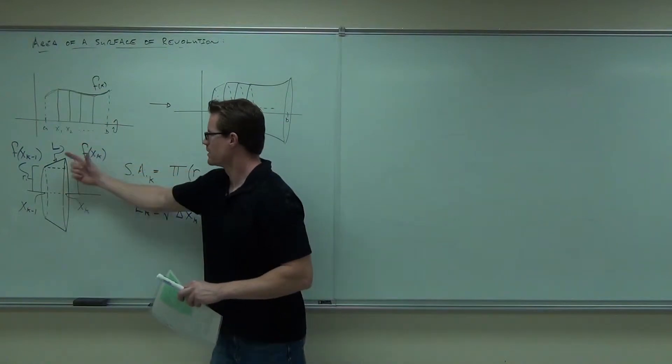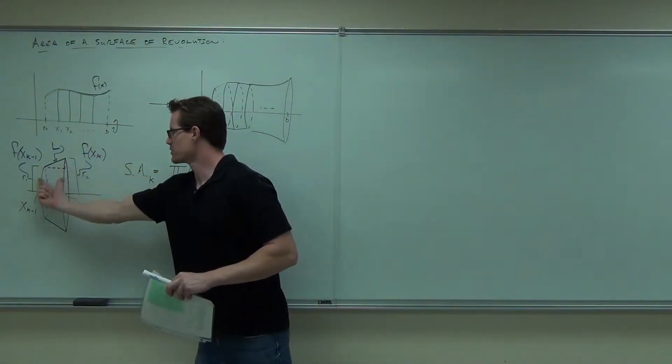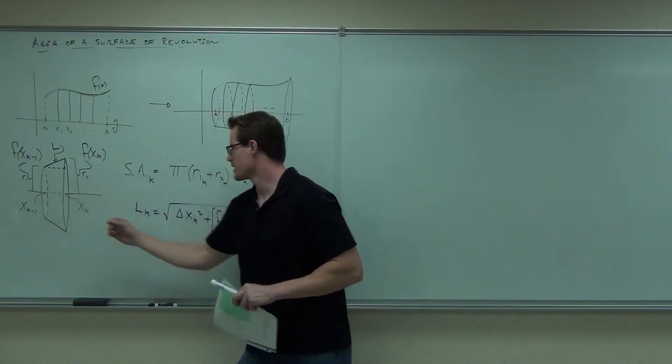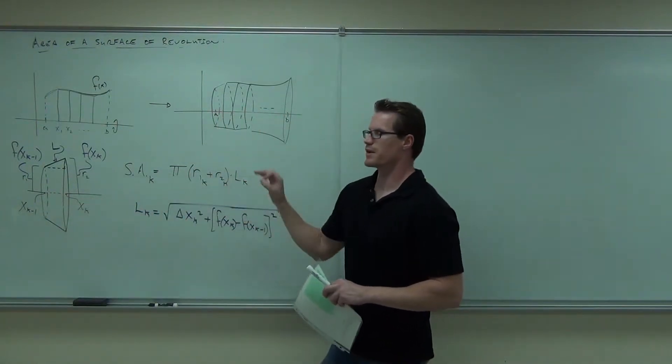Square it, square the height, square the length, this would be delta x squared, that's the change from x sub k minus 1 to x sub k, and then take a square root of it to find the length.